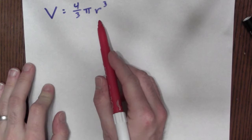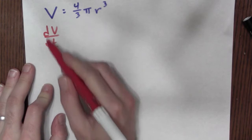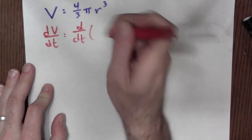I've got the original equation for the volume of a sphere of radius r. I'm going to differentiate both sides with respect to time. The derivative of V with respect to time is dV/dt. The derivative of the other side with respect to time we've got to think a little bit more about.